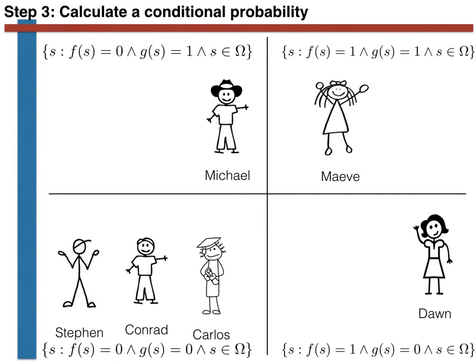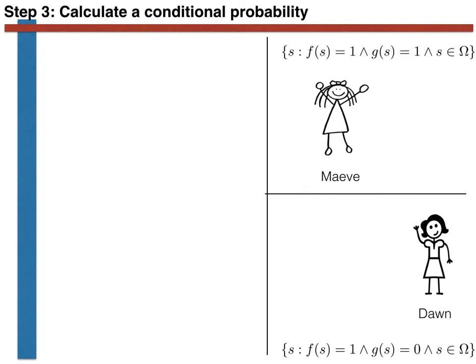Let's now finally calculate our conditional probability. We have been told that we picked a girl, so we know we must have picked either Maeve or Dawn. We need to introduce new nomenclature to distinguish this from an absolute probability. What we are calculating is the probability that the selected person's name begins with M, given that the selected person is female.